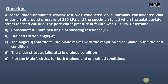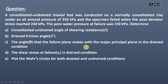Welcome back to the Master Civil Engineering. This question is about the consolidated undrained triaxial test conducted on a normally consolidated clay, and we have to determine the shear parameters for this clay. A consolidated undrained triaxial test was conducted on a normally consolidated clay under an all-around pressure of 250 kilopascal, and the specimen failed when the axial deviator stress reached 240 kilopascal. The pore water pressure at failure was 150 kilopascal. We need to determine: the consolidated undrained angle of shearing resistance, the drained friction angle, the angle that the failure plane makes with the major principal plane in the drained condition, and the shear stress at failure in the drained condition. We also need to plot the Mohr circle for drained and undrained conditions.